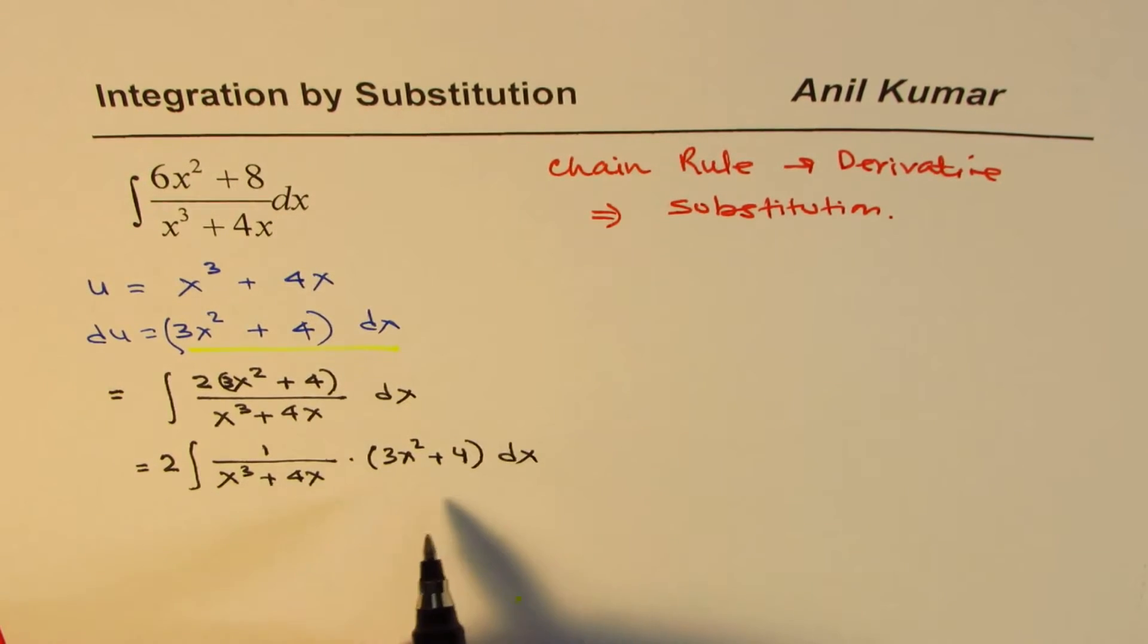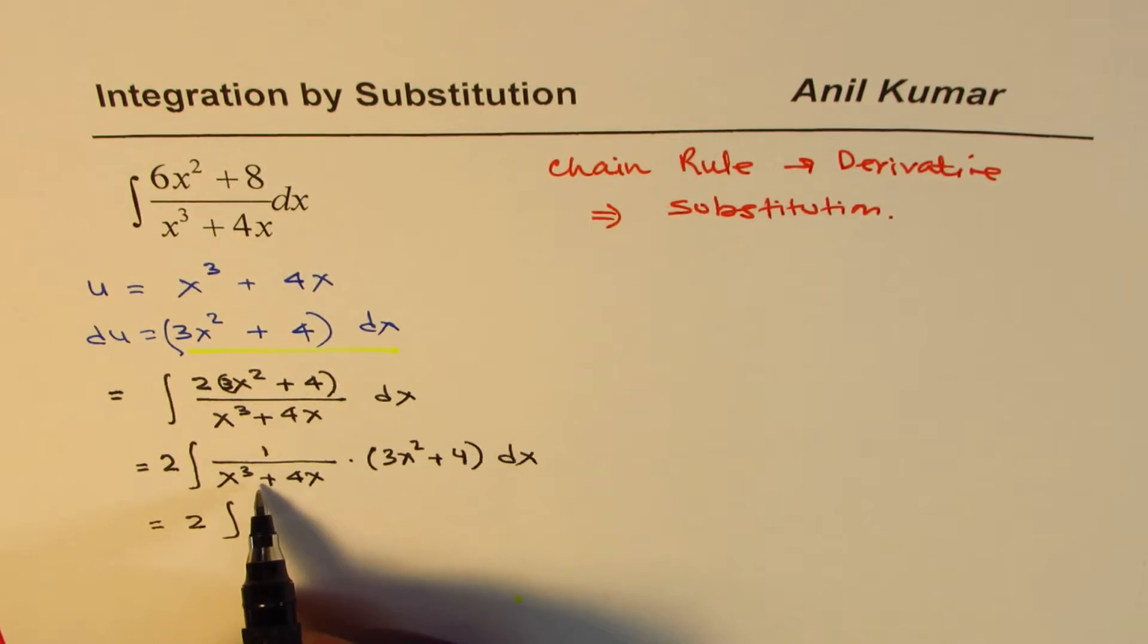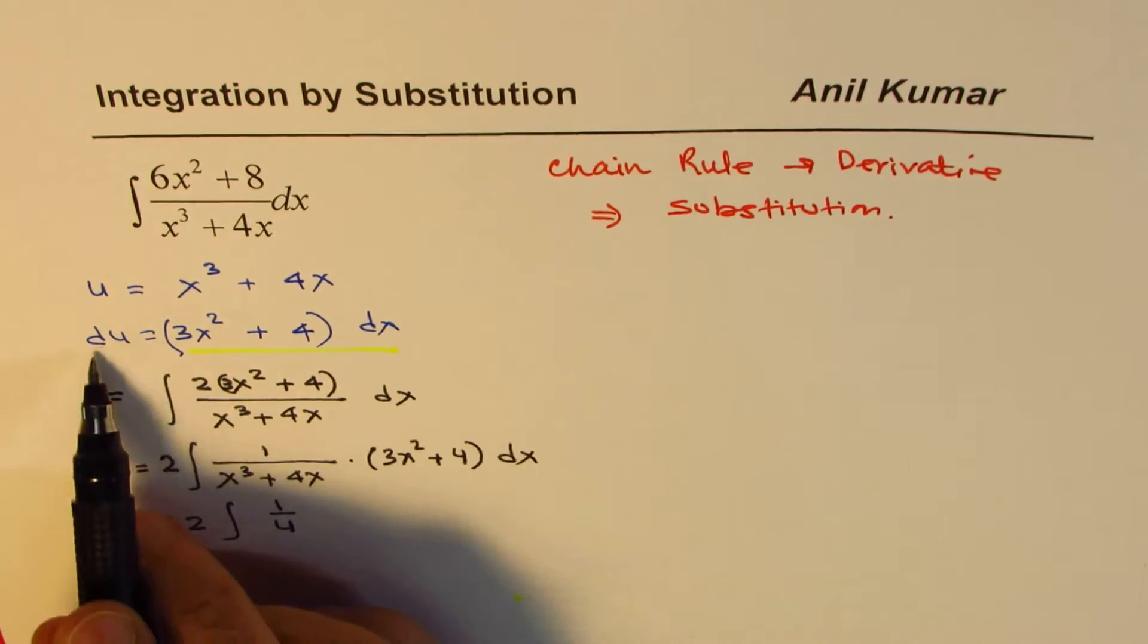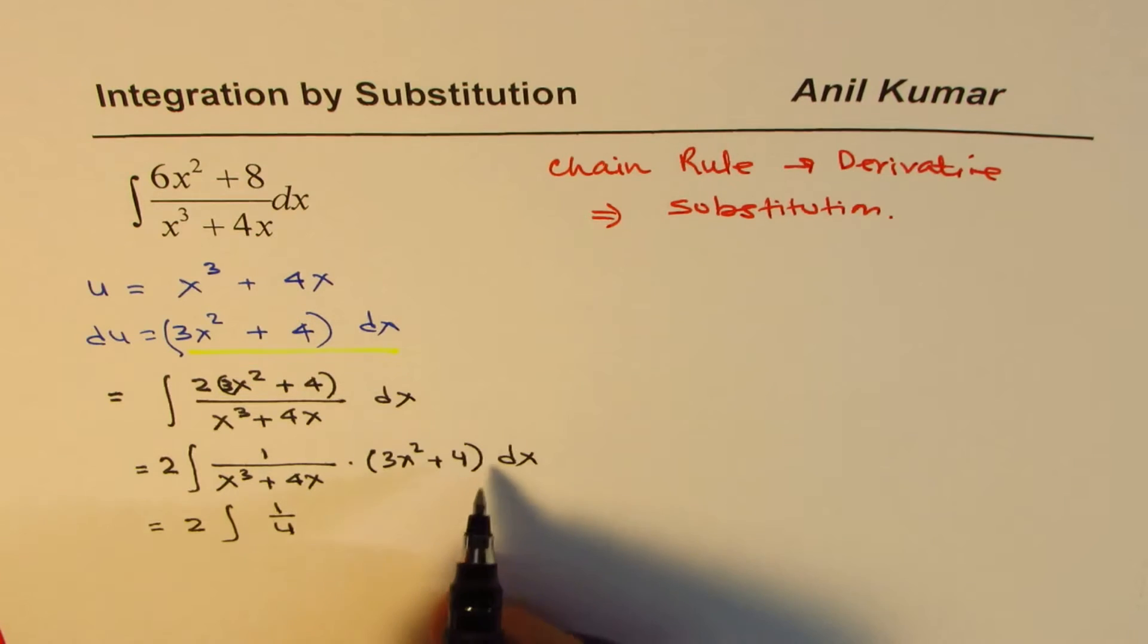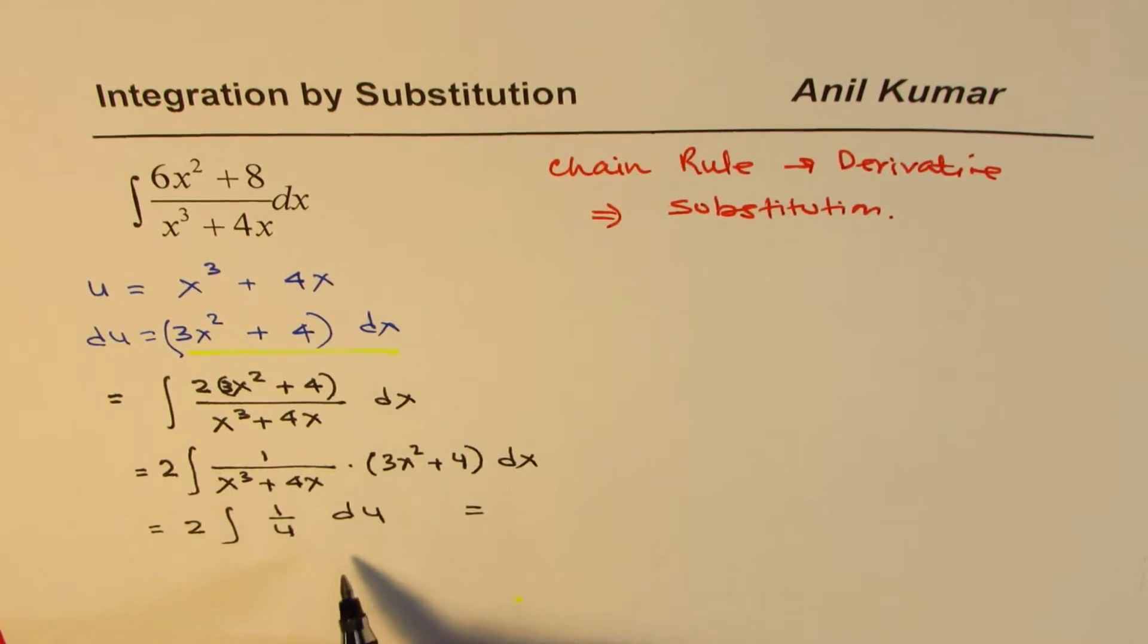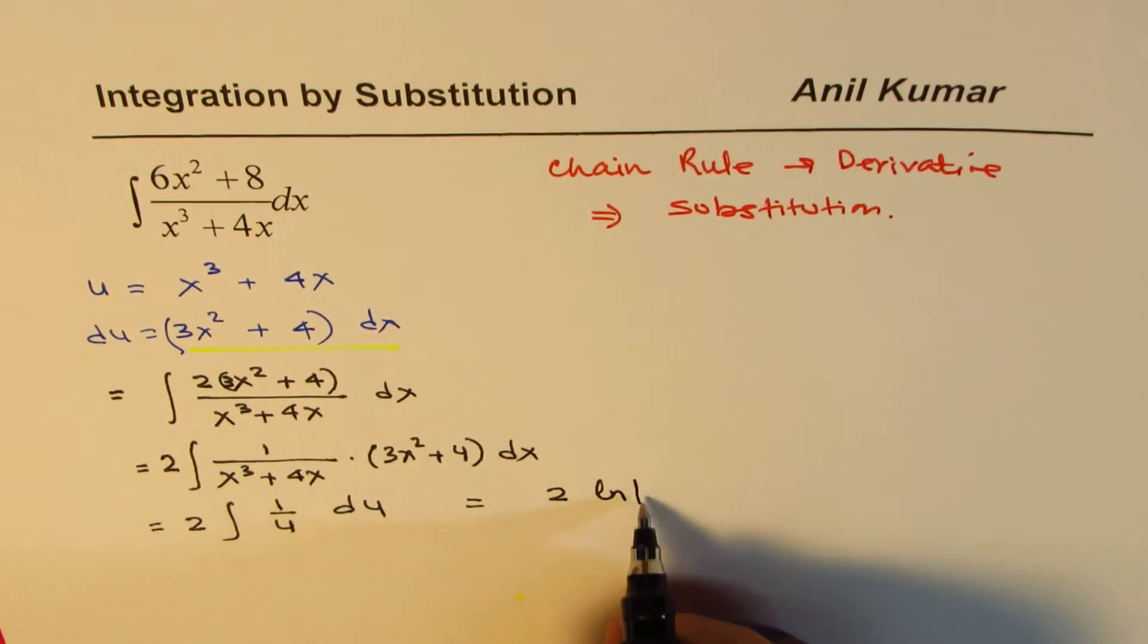Now, this kind of one-to-one substitution. We could write this as 2 integral of 1 over u du, so we have 1 over u du. Now that is an integral which you could easily find the solution of. So we have 2 ln absolute u.